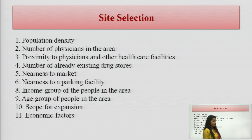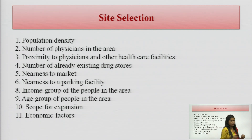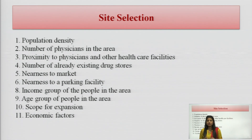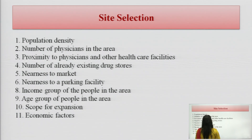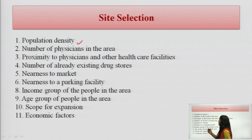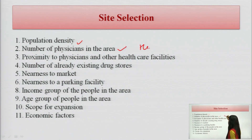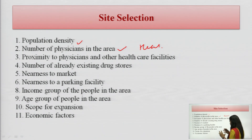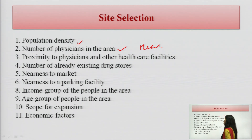Now, if anyone wants to open a retail store or a wholesale drug store, what are the site selection criteria? There are some points to note before opening it. Population density — how many people are living in that area, how many physicians or healthcare facilities are there, any hospitals, what is the number of clinics. Because as more prescriptions are there, more drugs will be sold.